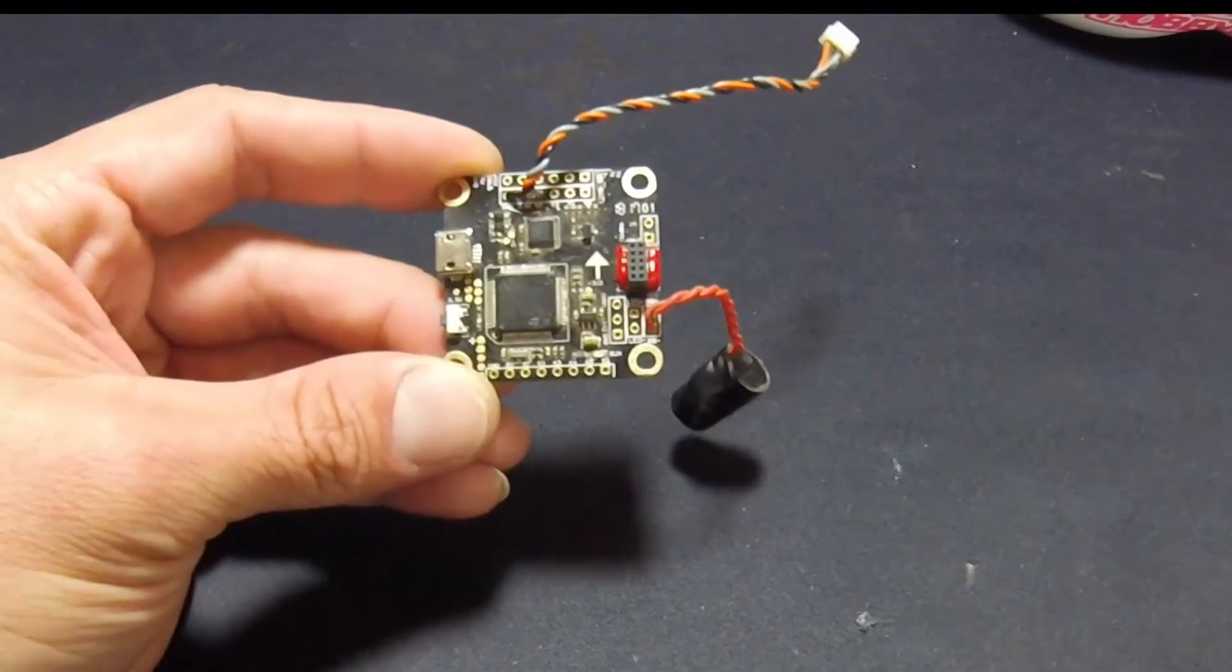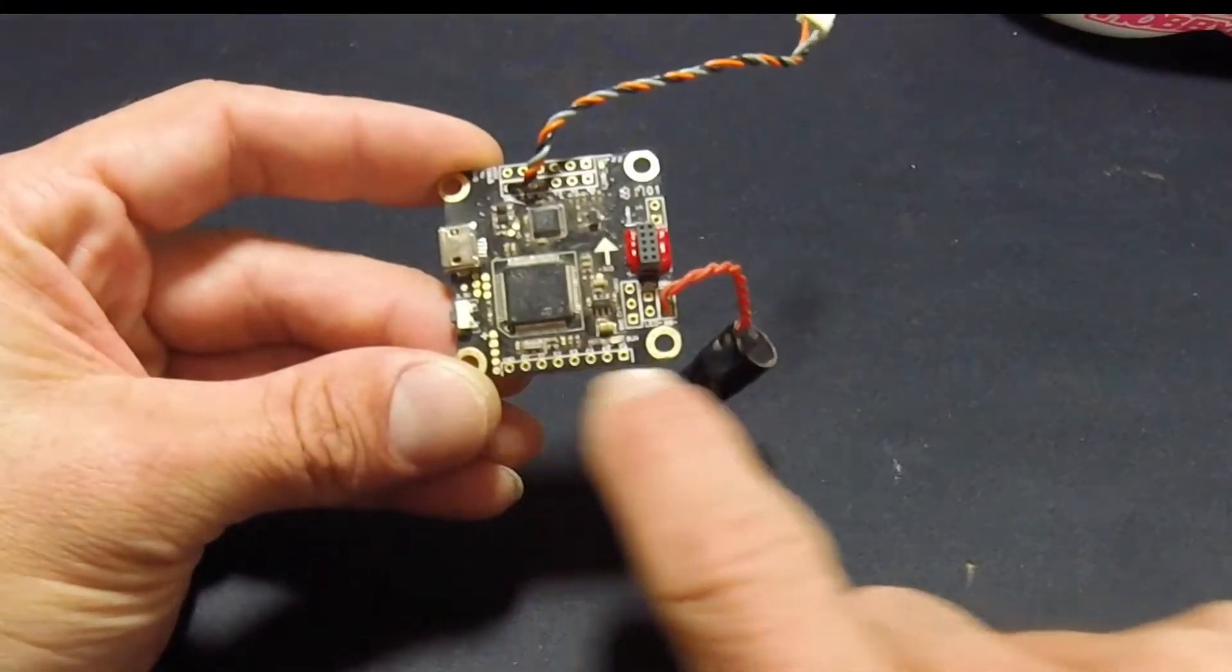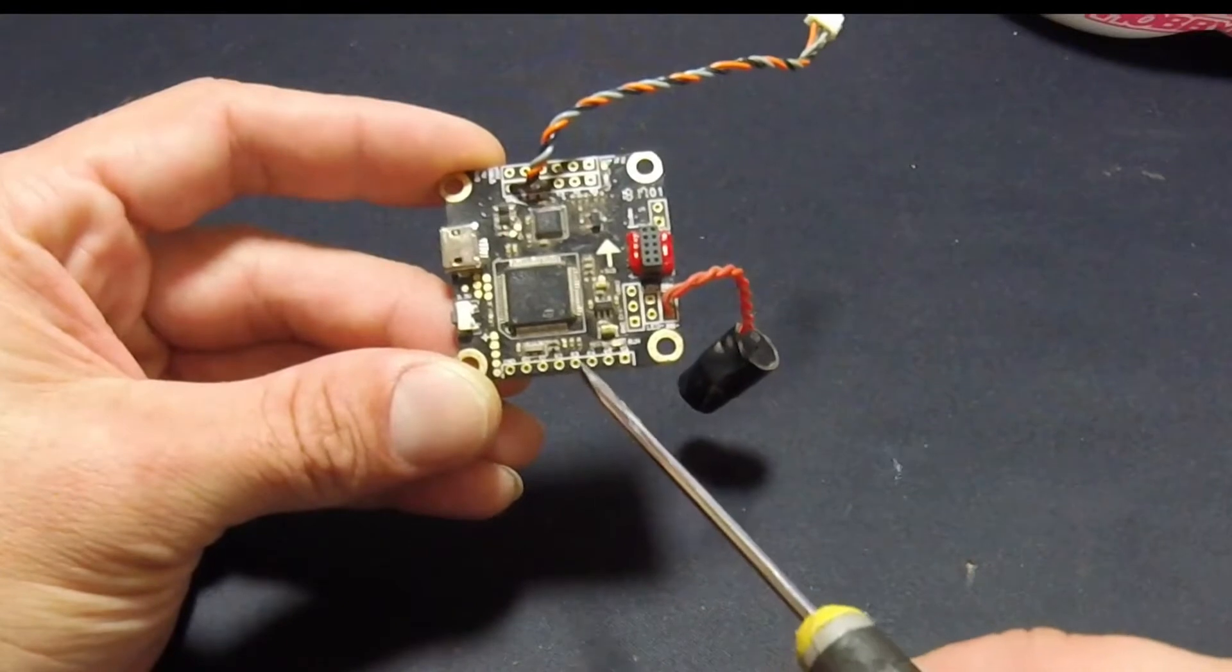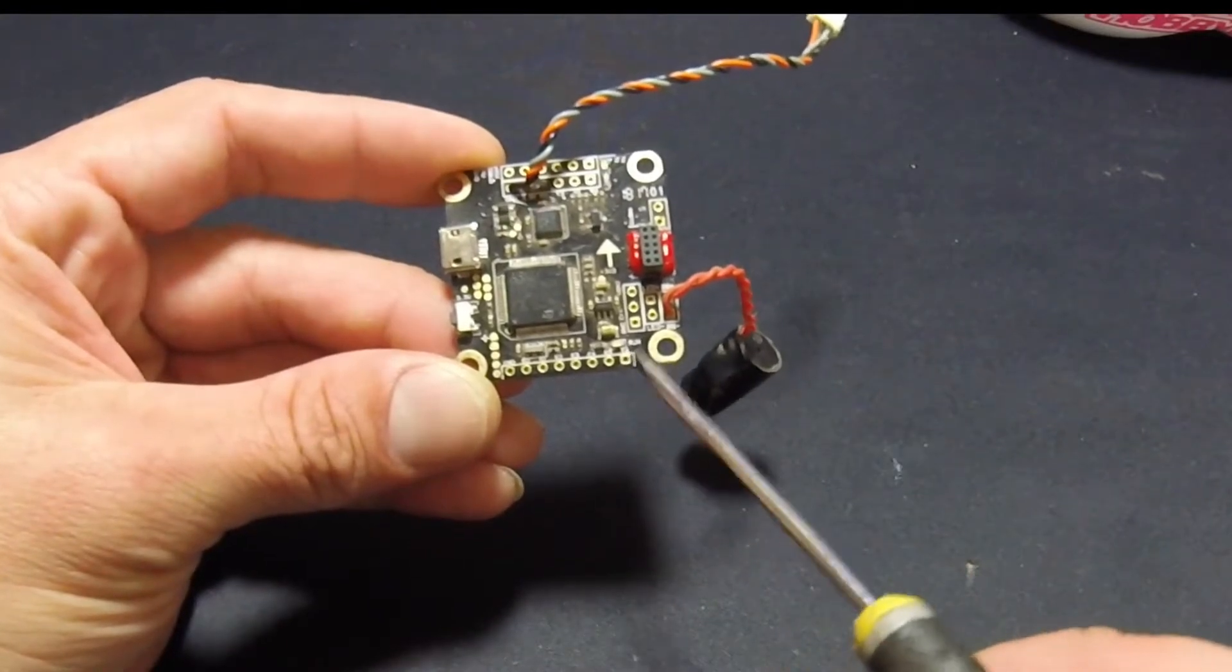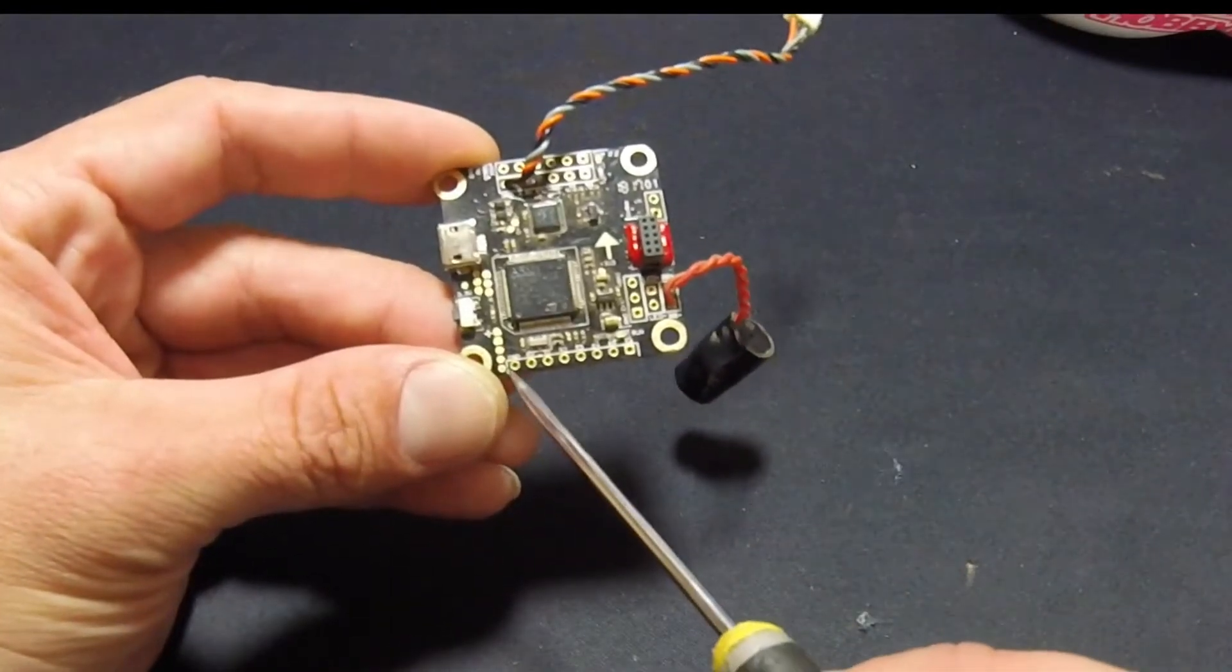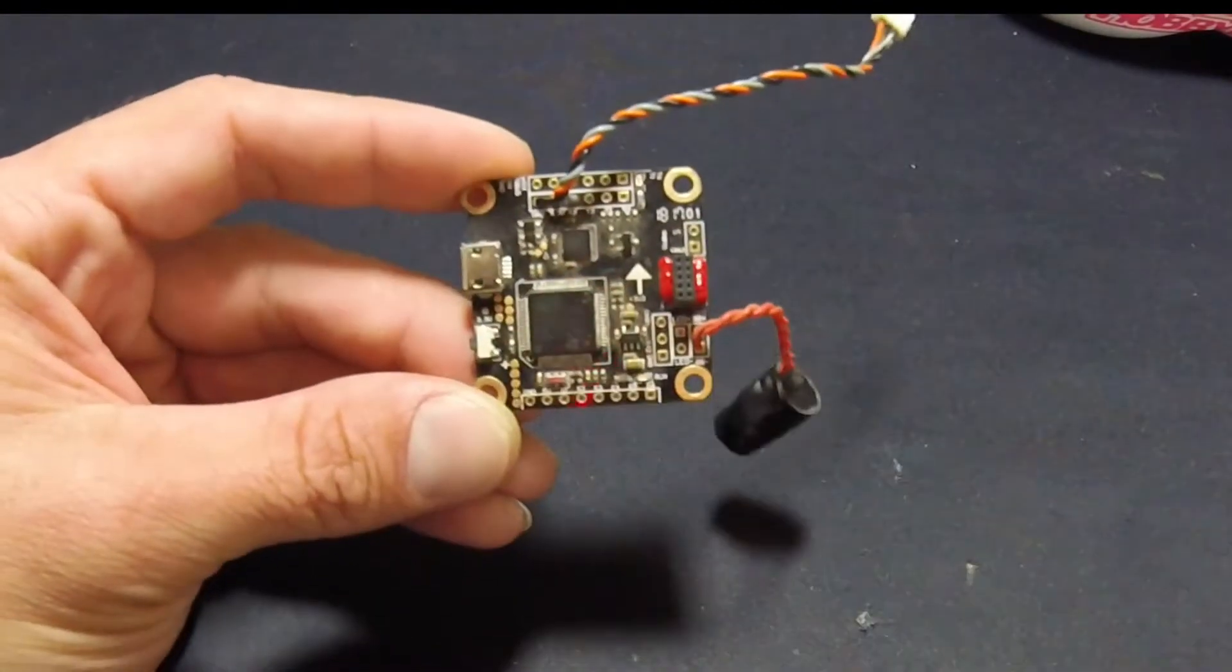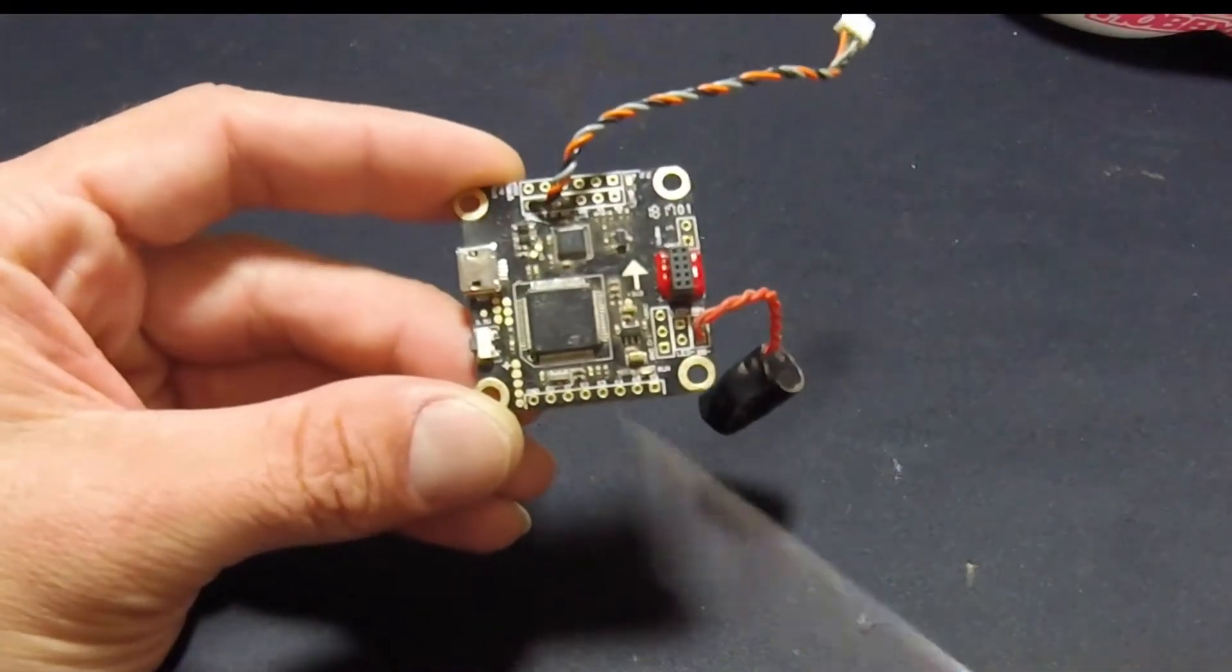On this bottom row right here, this is if you're going to hook up normal speed controls. You have your signal one, signal two, signal three, four, five, and six. You start six on this side, it goes that way, and then we have ground and five volts, and that's your power in. So if you need to power the flight control, you get a clean five volts and you're going to power from that side.